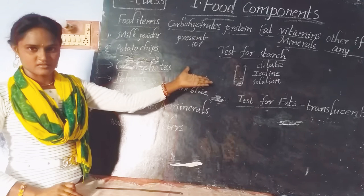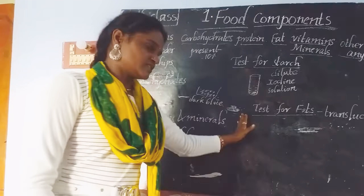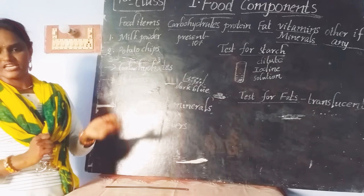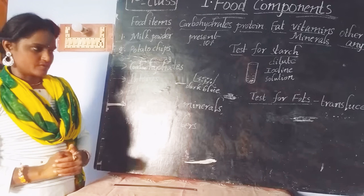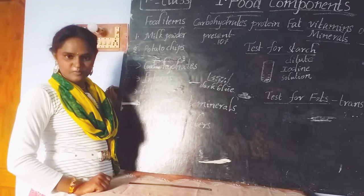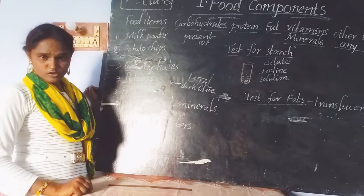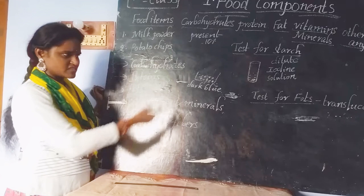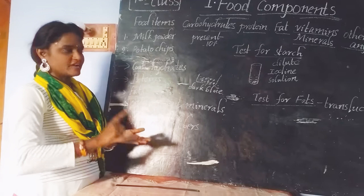The next test — the second test — is the test for fats. It is very easy; even small children are able to do this test. First, select your sample and take a piece of white paper. For example, if you want to test dosa, take the dosa and gently rub it on the paper. If you want to test puri, chapati, vada, or rice, you just take that sample and rub it on the paper.